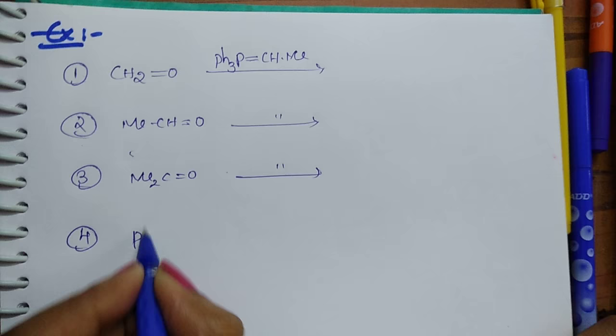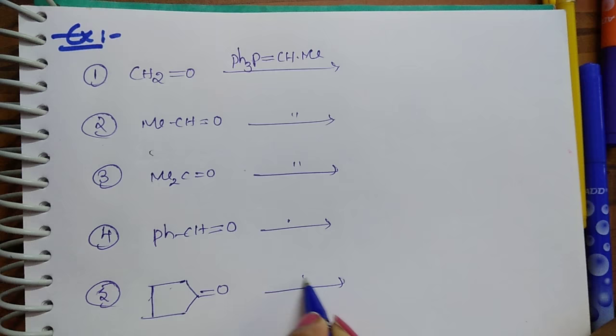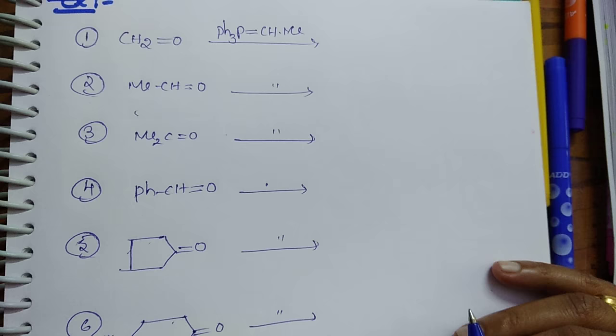Try this. Take out one book and pen, just try the answers to this, whether you are getting correct answer or not. The Wittig reagent is a very good method for the preparation of alkenes.